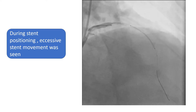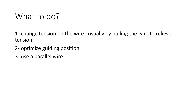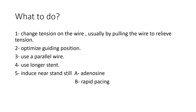So what to do? There are several steps that can be used when we face such a situation. First, you can change the tension on the guide wire, usually by pulling the wire to relieve excess tension. You can optimize the guiding position. A parallel wire can be used in the hope to immobilize the stent. A longer stent may be used, but this may not be useful in the presence of a side branch that you don't want to deploy the stent over. Or you induce a near standstill.